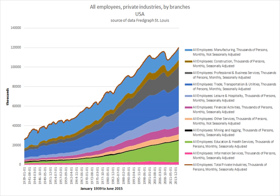Larger unions also typically engage in lobbying activities and electioneering at the state and federal level. Most unions in America are aligned with one of two larger umbrella organizations: the AFL-CIO created in 1955, and the Change to Win Federation which split from the AFL-CIO in 2005. Both advocate policies and legislation on behalf of workers in the United States and Canada, and take an active role in politics. The AFL-CIO is especially concerned with global trade issues.